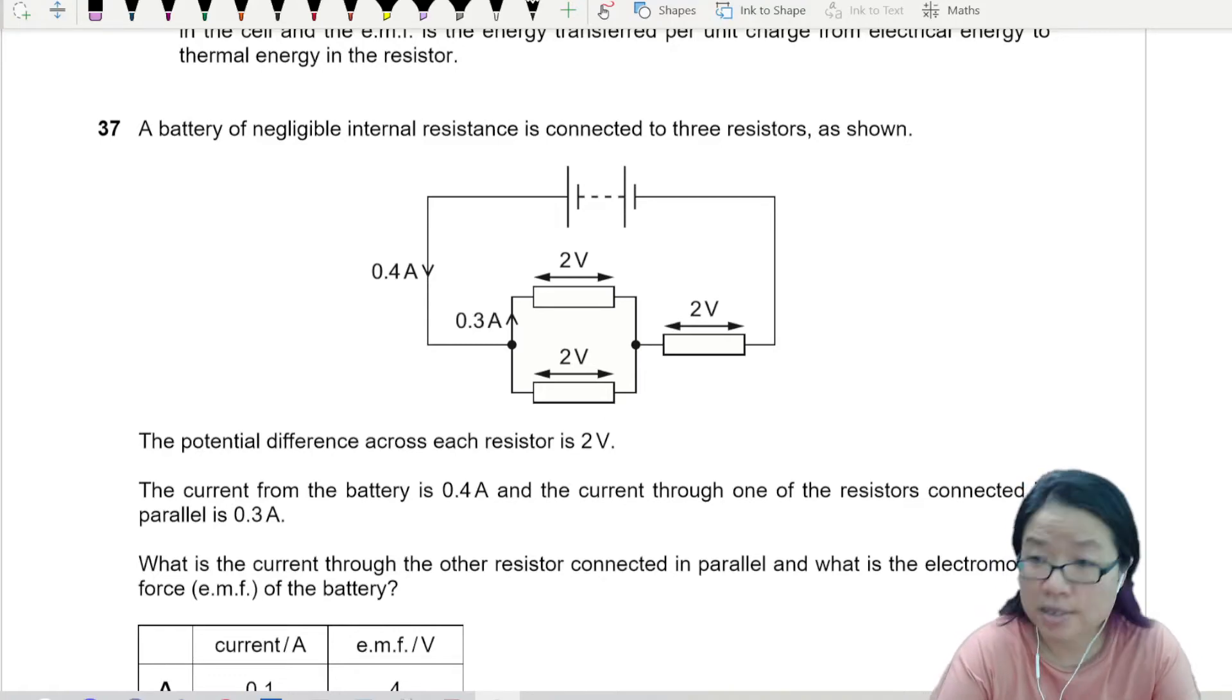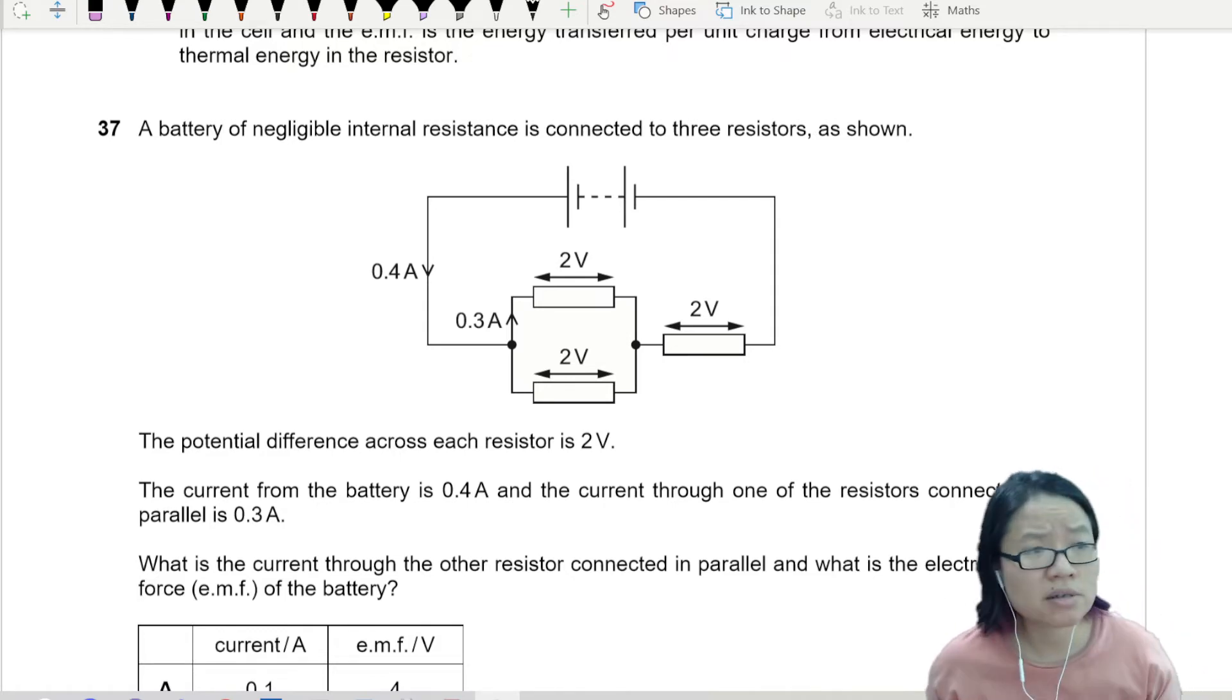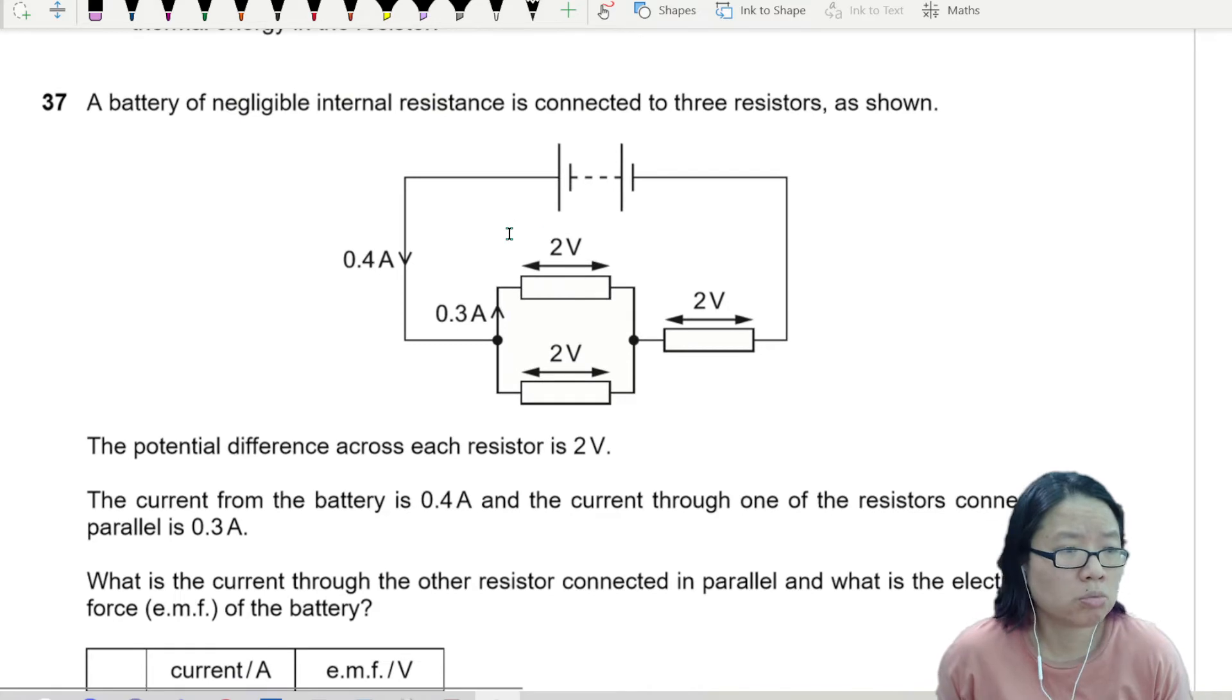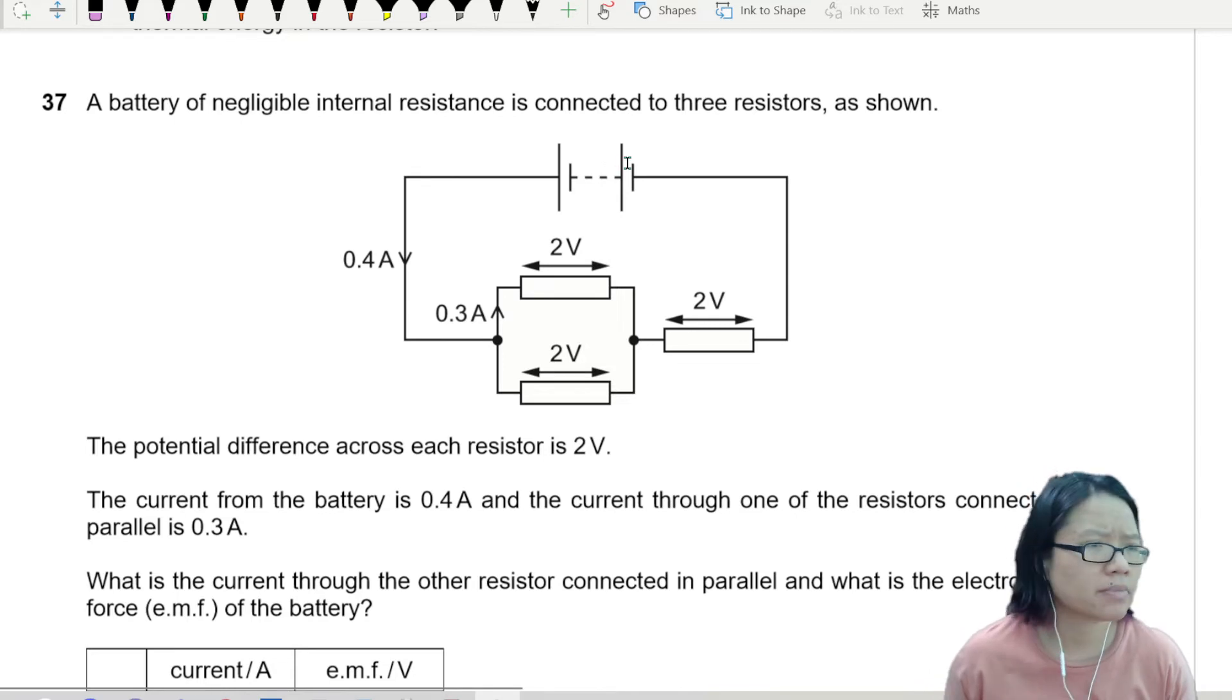This question is a circuit question with three resistors. You don't know what the resistances are or if they're the same. The only thing I know is labeled in the circuit. There's a battery here with no internal resistance, which is always great. Here to here is 2 volts, here to here is 2 volts.